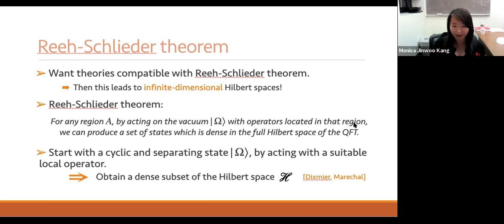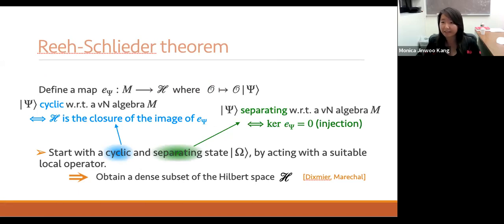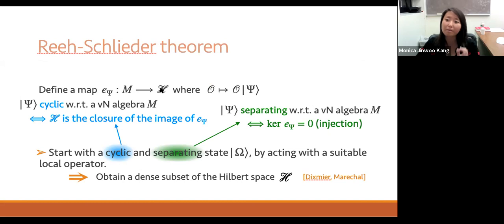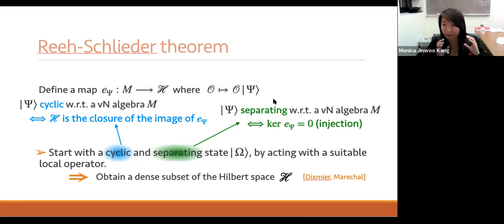Having Reeh-Schlieder is nice because we can have the vacuum as a cyclic and separating state. A local operator acting on the vacuum gives rise to a dense subset of the Hilbert space. A separating state means the map from the von Neumann algebra to the Hilbert space is injective — its kernel is explicitly zero. This is expected in holography: you always want to match the spectra of the bulk theory and the boundary CFT, as in AdS5/CFT4.